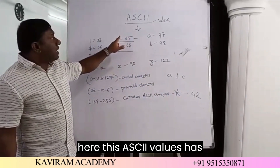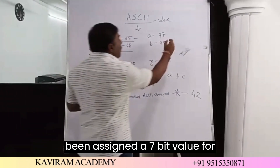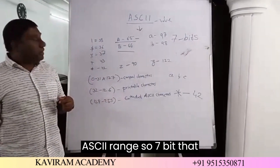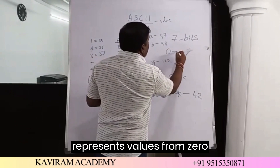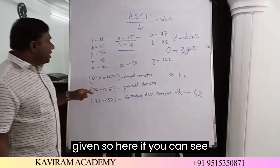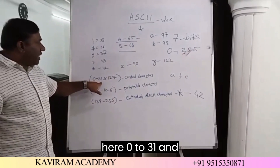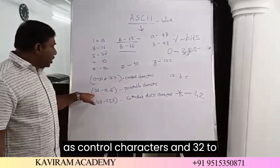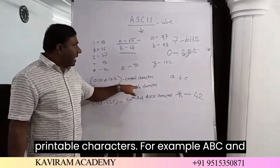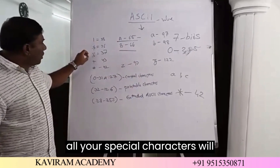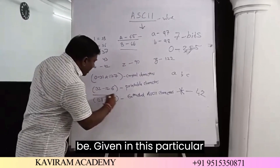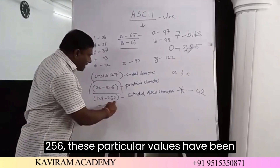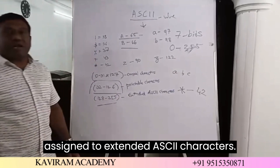This ASCII value has been assigned a 7-bit value, so the ASCII range represents values from 0 to 255. Here, values 0 to 31 and 127 have been assigned as control characters. Values 32 to 126 have been given for printable characters — for example, A, B, C and all your special characters fall in this range from 32 to 126. Similarly, 128 to 256 have been assigned to extended ASCII characters.